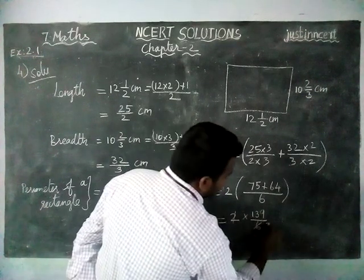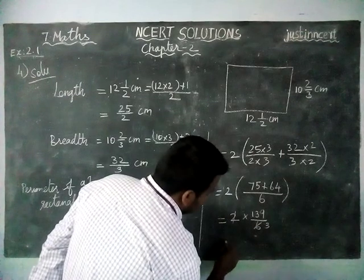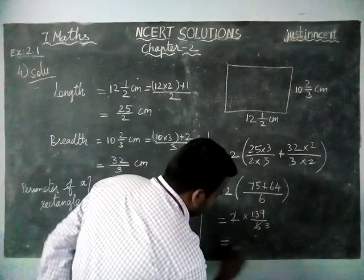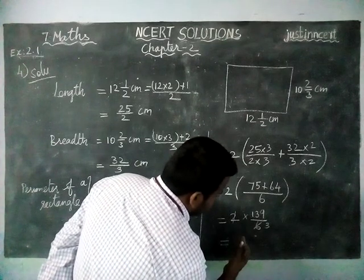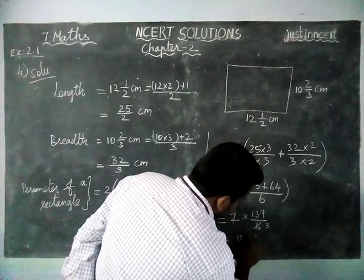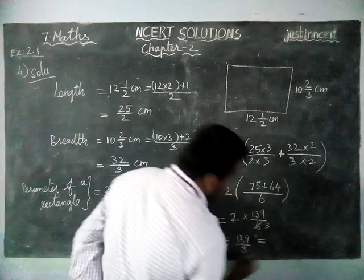2 into, 3 2s are 6, and if it is possible you can divide this. 139 also, if you are dividing, 139 by 3 is equal to, in 13...